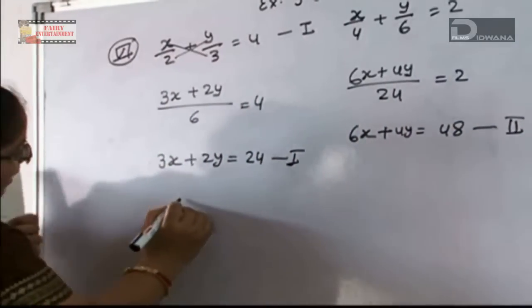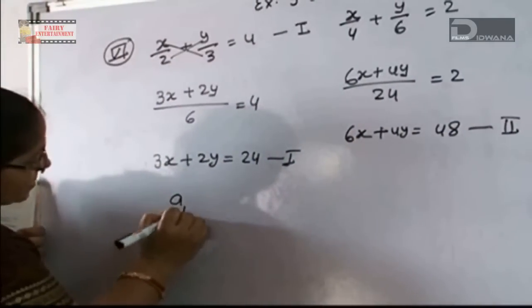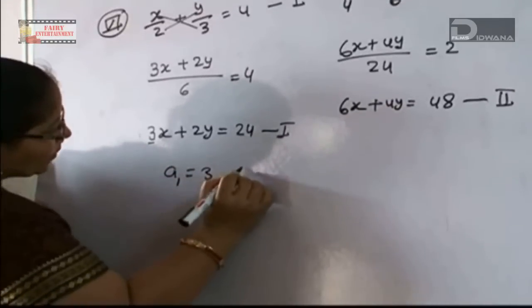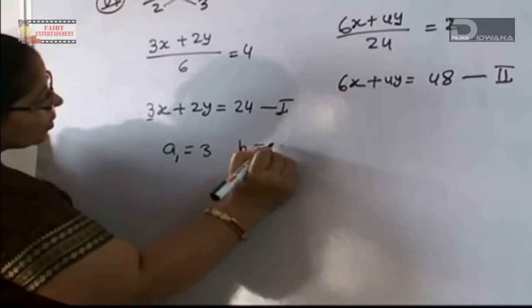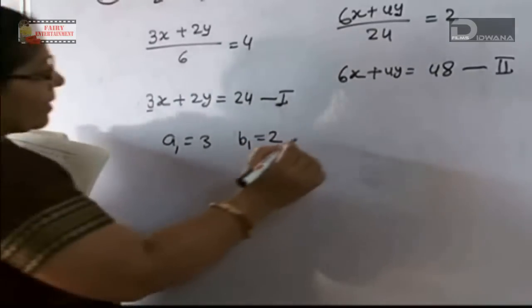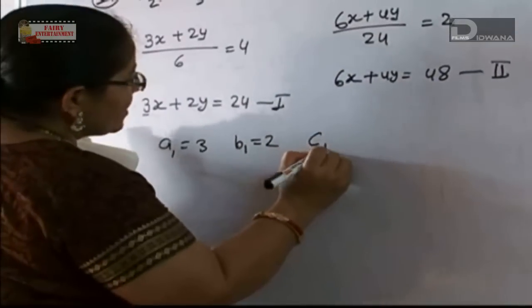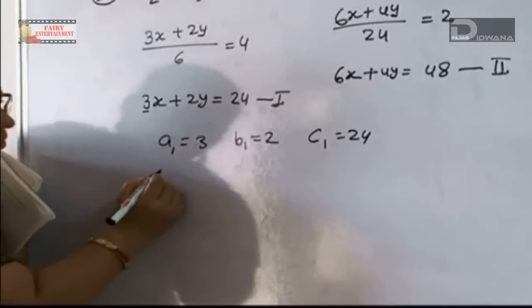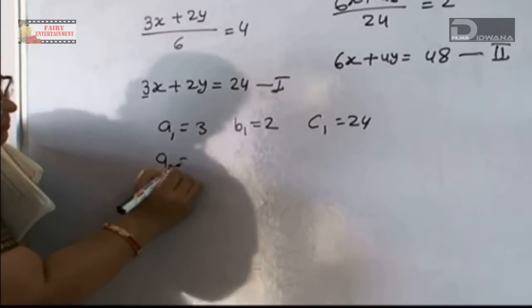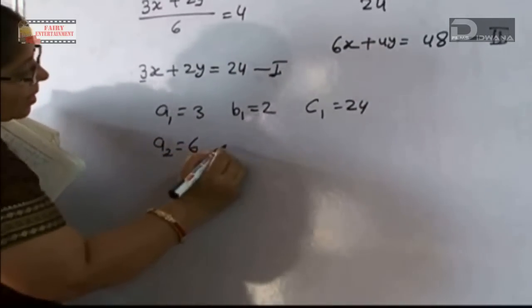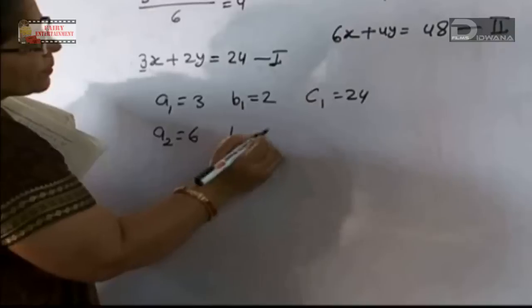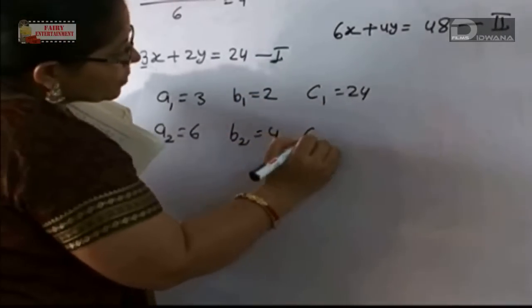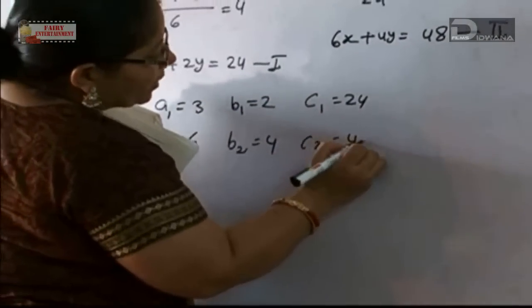The value of a1 is 3, value of b1 is 2, value of c1 is 24. Similarly, value of a2 is 6, value of b2 is 4, and value of c2 is 48.